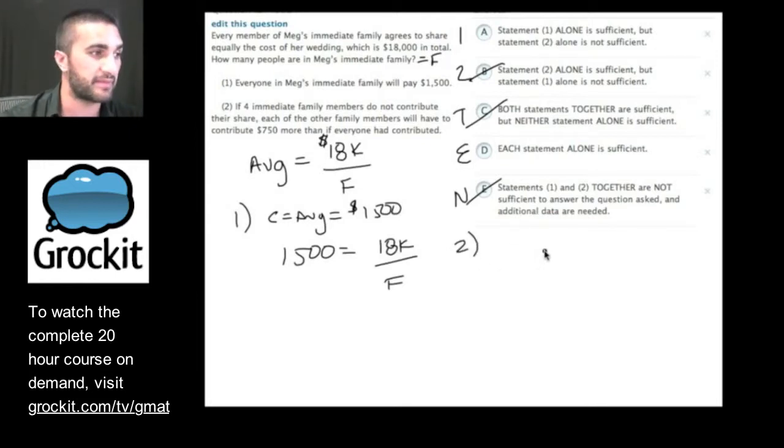So let's test out two. If four immediate family members do not contribute their share, slackers, each of the other family members will have to contribute $750 more than if everyone had contributed. It's written in English. It's kind of confusing. Let's see what this means. If four immediate family members do not contribute, so we take F minus four is the number of family members in this situation. And we said C was their contribution. So this would be C plus 750.